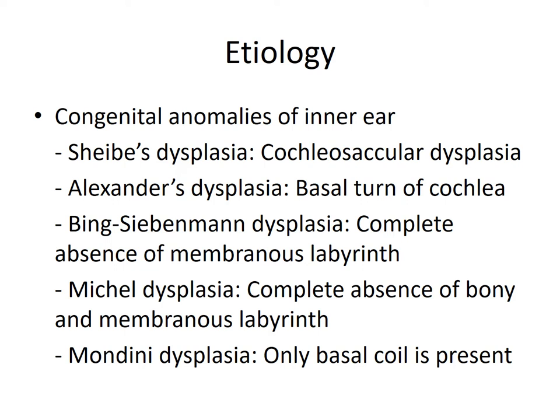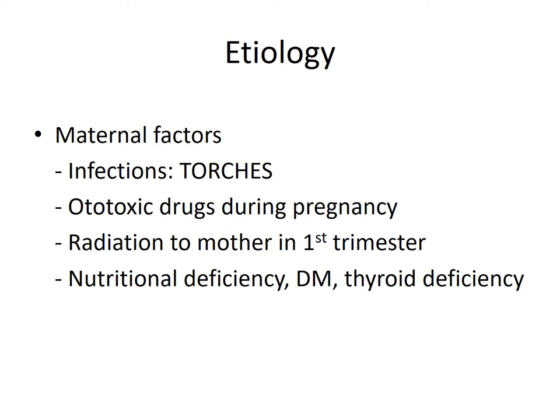Congenital anomalies of the inner ear are developmental pathologies. For example, Scheibe dysplasia — cochleosaccular dysplasia — where there is failure of development of the cochlea and the saccule. Then Alexander's dysplasia, in which the basal turn of the cochlea fails to develop, leading to high-frequency sensorineural loss. Then Bing-Siebenmann dysplasia, which is complete absence of the membranous labyrinth. Then Michel dysplasia, which is complete absence of the bony as well as membranous labyrinth. And Mondini dysplasia, where only the basal coil is present. These are some congenital anomalies of the inner ear which lead to a malformed inner ear and hence sensorineural hearing loss.